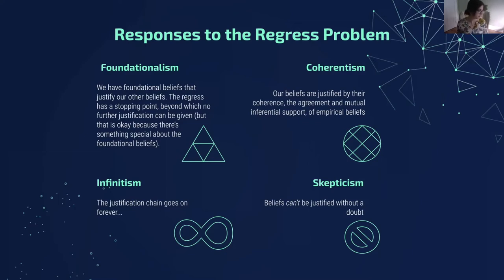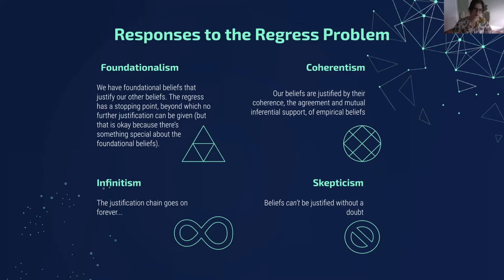We should just withhold belief about everything. Maybe the world's an illusion. My perception doesn't give me any evidence. Even inferences are not helpful. So for the skeptic, it's just end game. There are skeptic views in philosophy, some of which we've discussed when we discussed skepticism earlier in the semester. I won't say more about skepticism at this point because it's kind of a negative view — a view that you can't solve this problem. I'll focus primarily on the two most popular ways of solving the regress problem, which are the foundationalist and the coherentist ways.